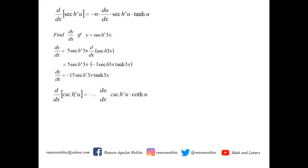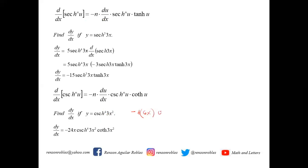For the derivative of csch^n(u): that equals -n·(du/dx)·csch^n(u)·coth(u). For dy/dx if y = csch⁴(3x²): n = 4, derivative of 3x² is 6x. So dy/dx = -4·6x·csch⁴(3x²)·coth(3x²) = -24x·csch⁴(3x²)·coth(3x²).